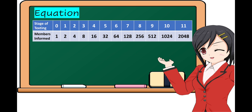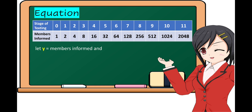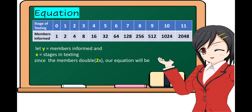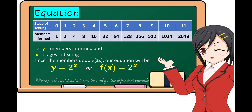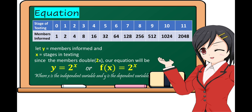We're now going to make an equation. If we let Y be the members informed and X be the stages of texting, and since the members double or multiply by 2 each time, our equation will be Y is equal to 2 raised to X, or f of X is equal to 2 raised to X, where X is the independent variable and Y is the dependent variable.